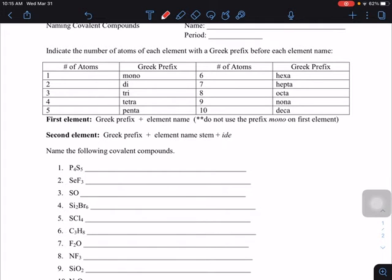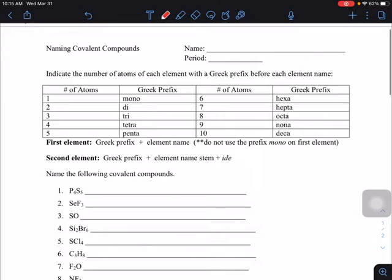All right chemistry students, I'm going to go over some examples for this worksheet naming covalent compounds. Your rules for naming covalent compounds are reviewed right here. For your first element, the first one that's listed,